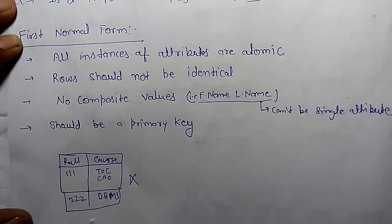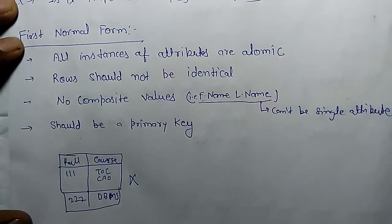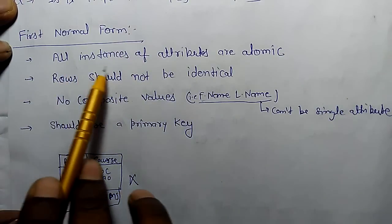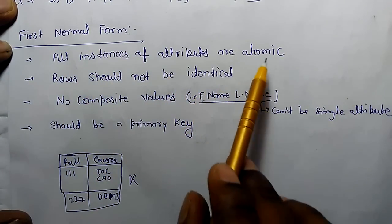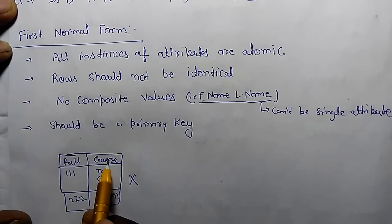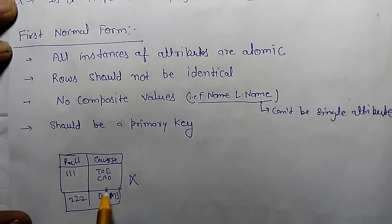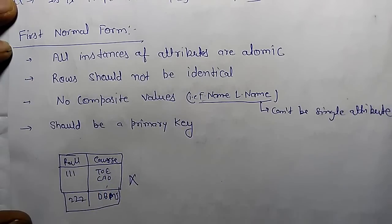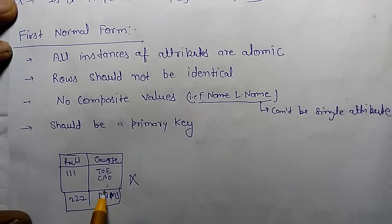Is this table in first normal form? No, it is not in first normal form. Why? There are some properties for first normal form. All instances of attributes are atomic. Here we can see the instance of course attribute is not atomic. It has two values. It should have only one value.